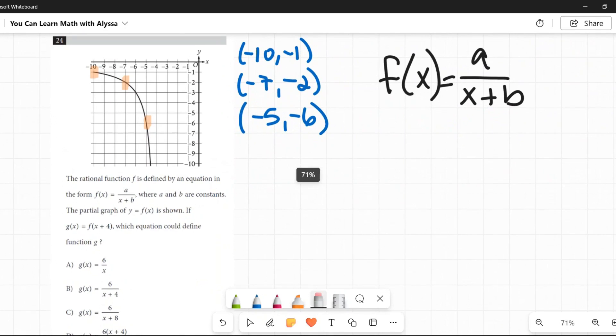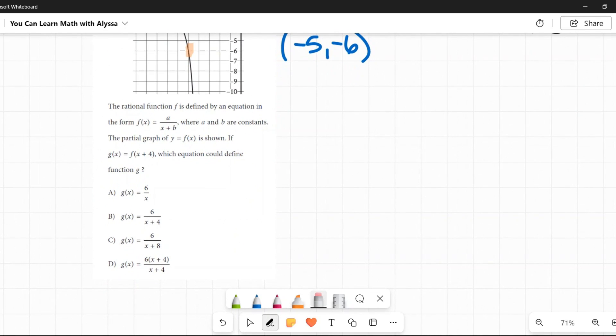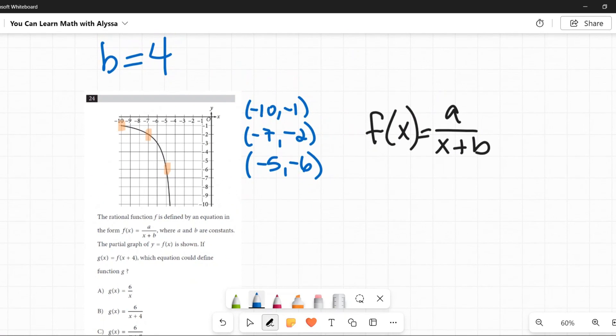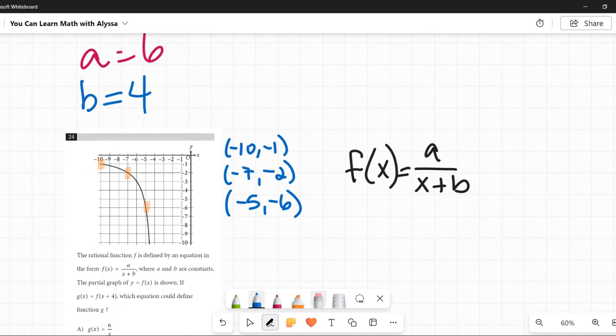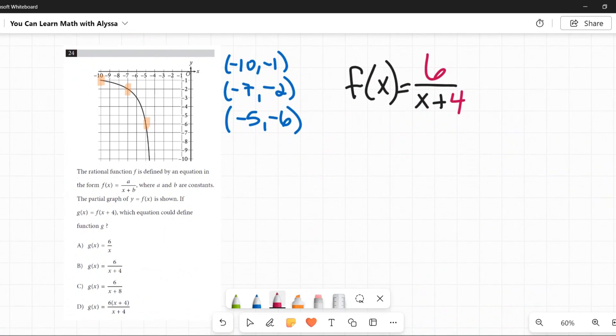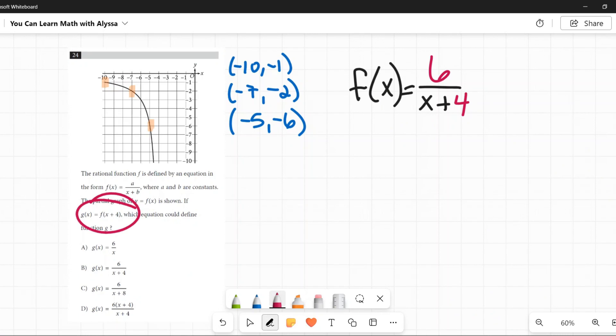Now let's go back and look at our problem here. If g of x is equal to f of x plus 4, which equation could define g? I'm going to rewrite this original equation because we had it as f of x equals a over x plus b. But we know now, we know that a is 6. And we know that b is 4. So that's the original equation. f of x is 6 over x plus 4. Now, g of x is equal to f of x plus 4. So that means wherever there's an x in this f of x, we're going to plug in x plus 4. Okay. So for that x, I'm going to plug in x plus 4.